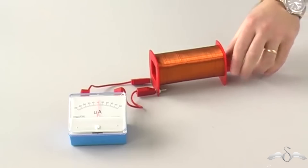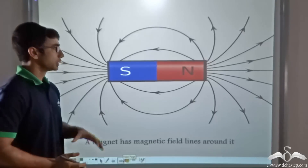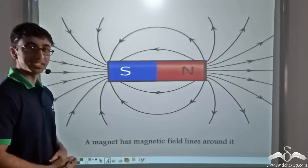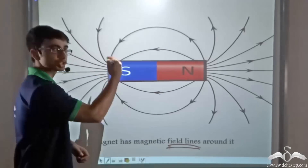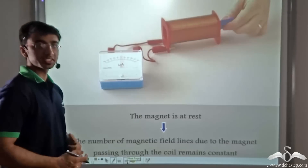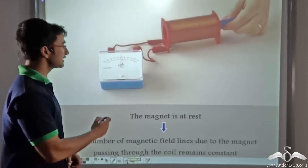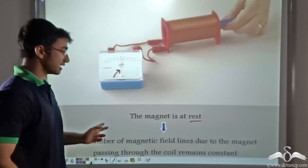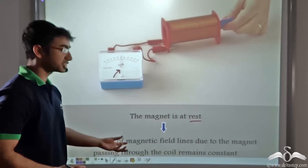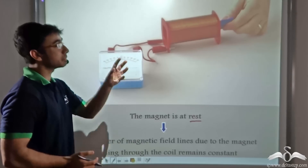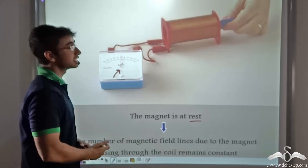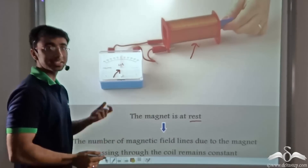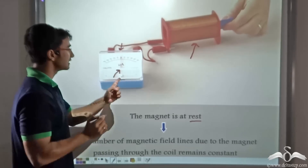Let us find out what exactly is going on. We know that a bar magnet has a magnetic field all around it, represented by magnetic field lines from north to south. When the magnet is at rest, the galvanometer needle shows no deflection. Why? Because when the magnet is at rest, the number of magnetic field lines passing through the coil remains constant — the number of field lines linked with the coil is constant — and as a result there is no deflection. The needle remains fixed at the zero mark.